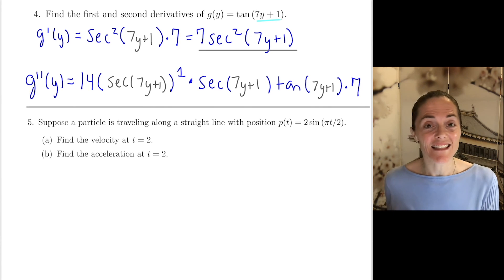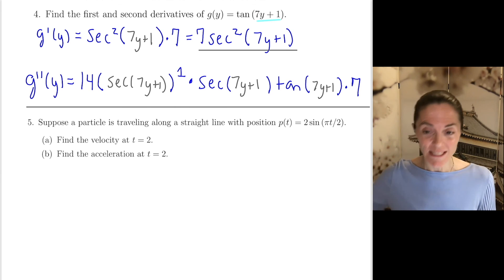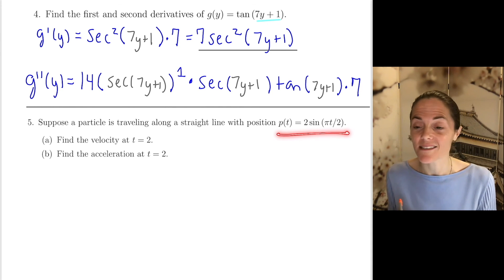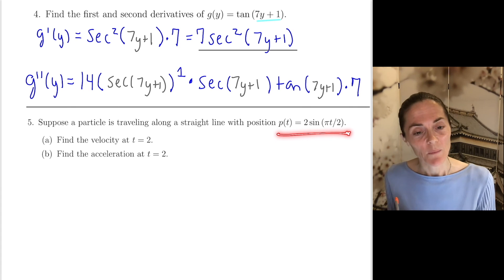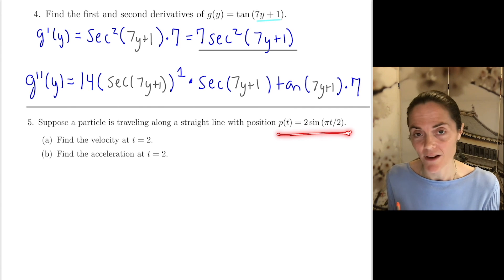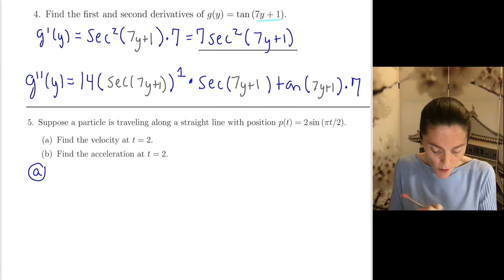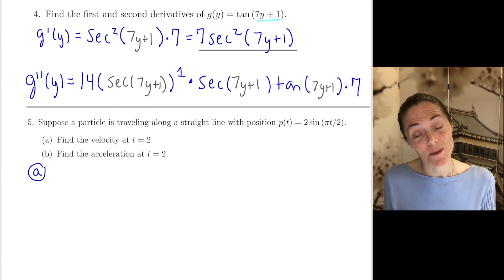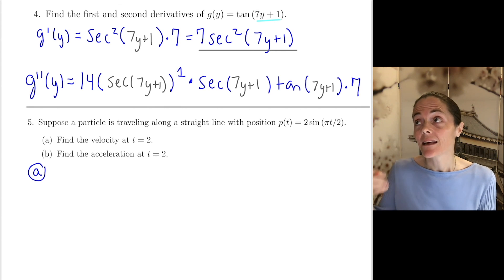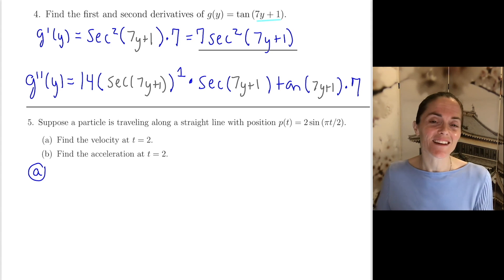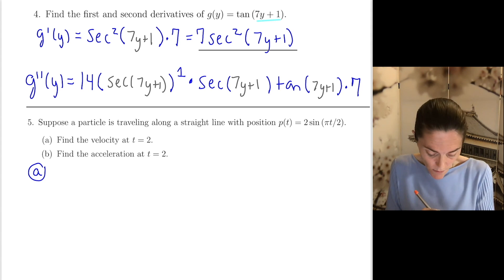Number 5 — this is the last one. We have motion along a line, with position function p of t equals 2 times sine of pi t over 2. We want to find the velocity and acceleration at t equals 2. To begin, we know velocity is the derivative of position, and acceleration is either derivative of velocity or second derivative of position. So first let's calculate the velocity as a function of time.